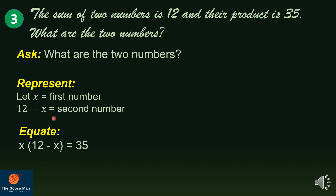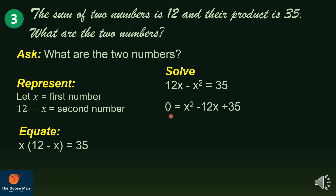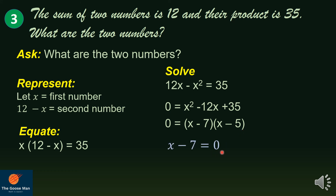Distributing x to 12 minus x, we get 12x minus x² equals 35. Moving terms to the other side applying the addition property of equality, we have 0 equals x² minus 12x plus 35. Factoring this quadratic trinomial, the factors are x minus 7 times x minus 5. Applying the zero property: x minus 7 equals 0 gives x equals 7.